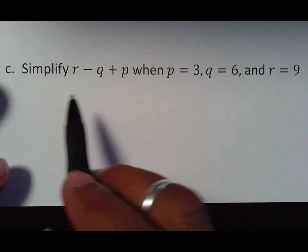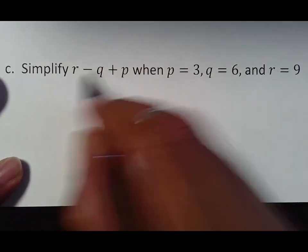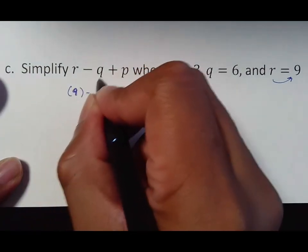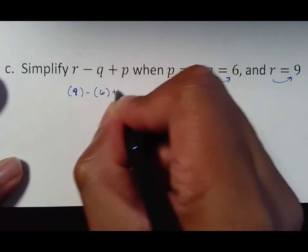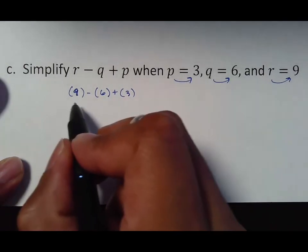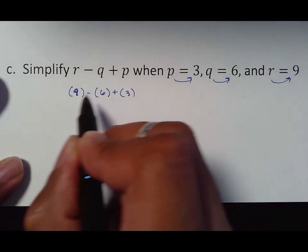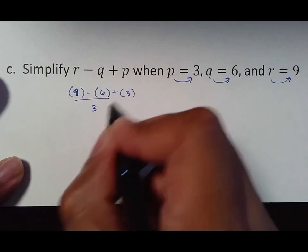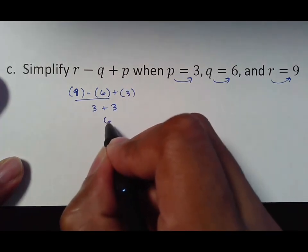I'm going to go over the answer now. R. Remember, don't just assume it's first, second, third. R is substituted with a nine minus Q is six plus P is three. And so what we want to do is, again, this is just 9 minus 6 plus 3. There's nothing special about these parentheses. So don't let that overwhelm you. 9 minus 6 is 3. Then rewrite. Bring down whatever we did not use. And 3 plus 3 is 6. All right.